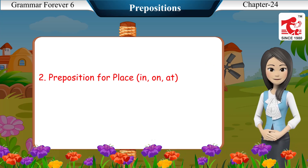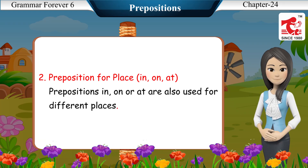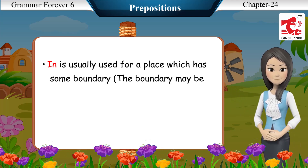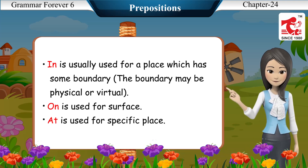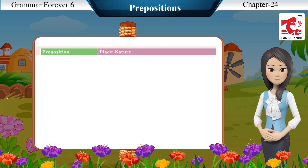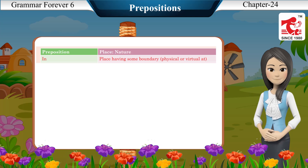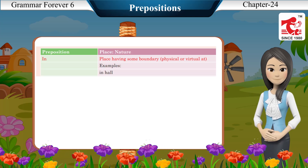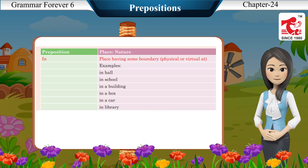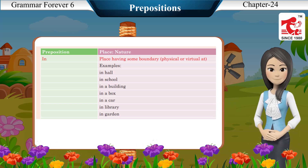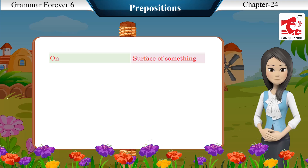Prepositions for place — in, on, at. 'In' is usually used for a place which has some boundary, whether physical or virtual. 'On' is used for a surface. 'At' is used for a specific place. Examples of 'in': in the hall, in school, in a building, in a box, in a car, in the library, in the garden, in Australia, in a room, in a cupboard.